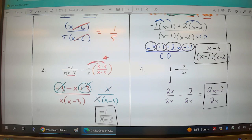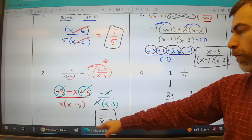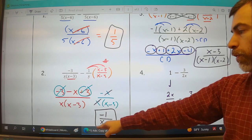So those are my simplified answers. First one, 1 fifth. Number 2 down below it, negative 1 over x minus 3. Number 3, x minus 3 over x minus 1 times x minus 2. And number 4, 2x minus 3 over 2x. There's your problems.